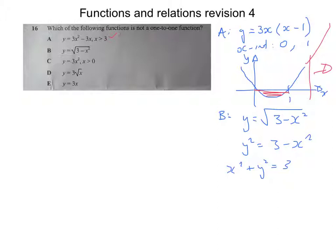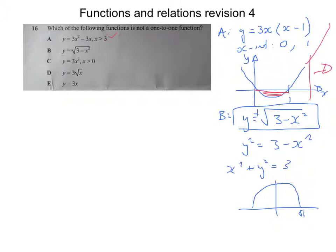In the original function it's the positive half of a circle graph, based around the origin with a radius of root 3, so positive root 3 and negative root 3 on the x-axis. Now in this case every x value only has one y value, but we can clearly see that y values have more than one corresponding x value for this graph. So B is not a one-to-one function.